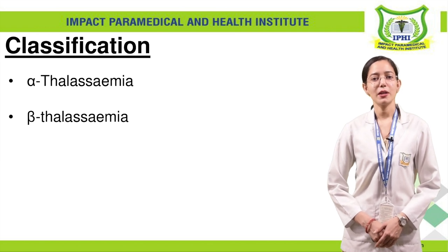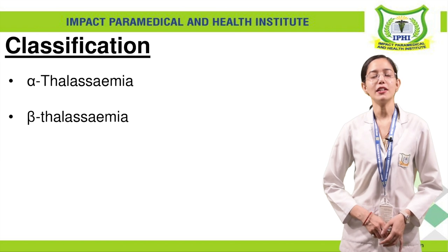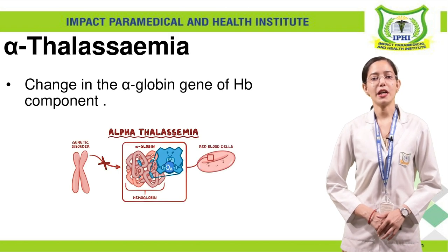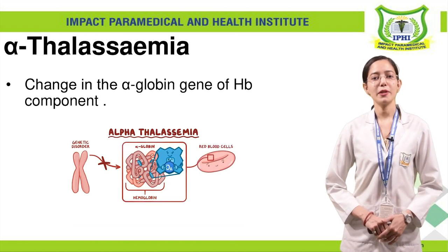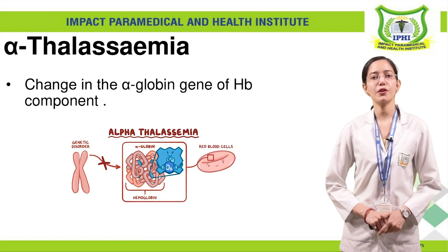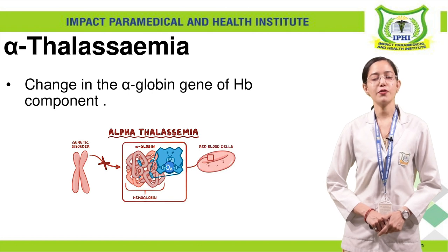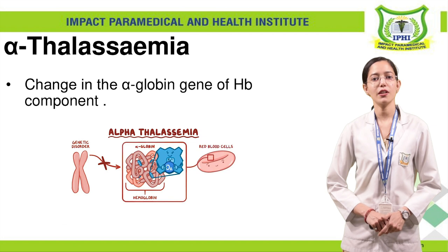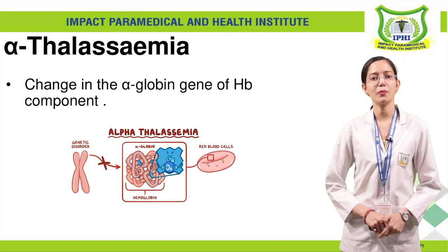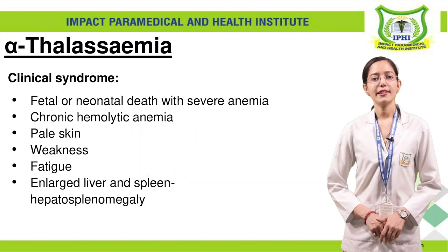If we know about classification, there are two types: alpha-thalassemia and beta-thalassemia. Alpha-thalassemia — as already mentioned, our hemoglobin has different polypeptide chains like alpha, beta, and gamma. Alpha-thalassemia occurs when there are any changes in the production of the alpha chain gene. This clinical syndrome is called alpha-thalassemia.